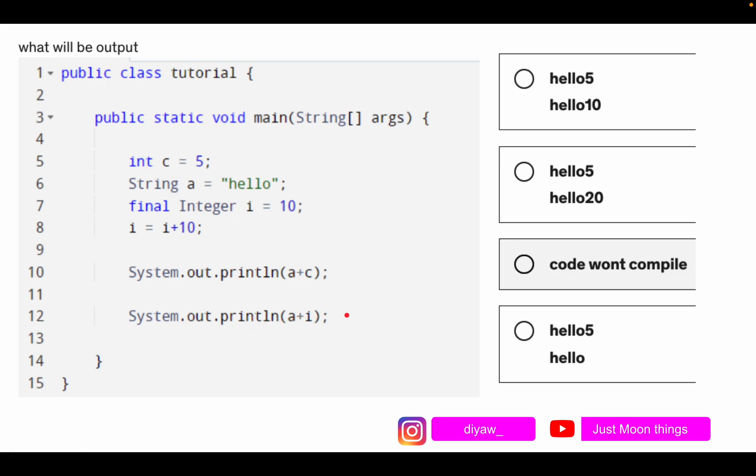Over here we have a class named tutorial and after that we have a main method, public static void main, the basic Java method. Then we are creating a variable of type int, the name of the variable is c and we are assigning value 5. Then we have a string a equals hello. After that we have a final integer i equals to 10, and then we are doing i equals to i plus 10.